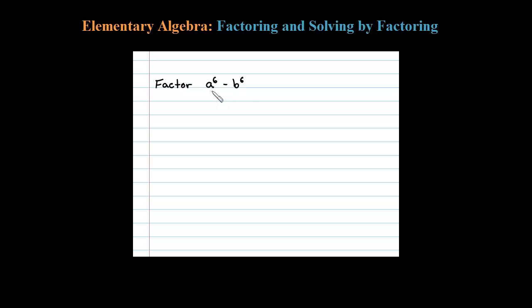Here we have a binomial that looks like difference of squares but it's also difference of cubes. Remember if you have a binomial that's both, you should always do difference of squares first. So what squared gives me a to the sixth?